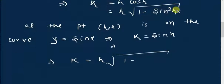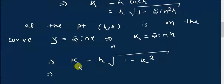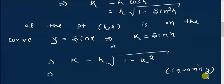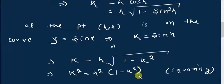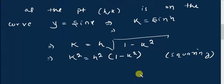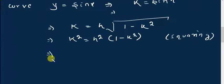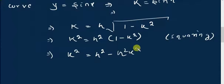In place of sin²h we write k², because k = sin h. So k = h · √(1 - k²). Squaring both sides, we get k² = h² · (1 - k²), which simplifies to k² = h² - h²k².